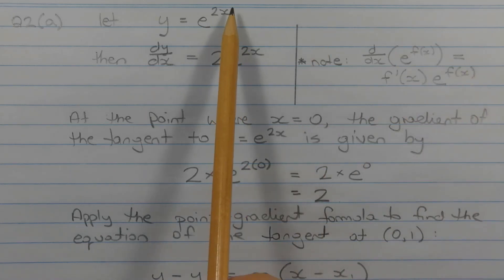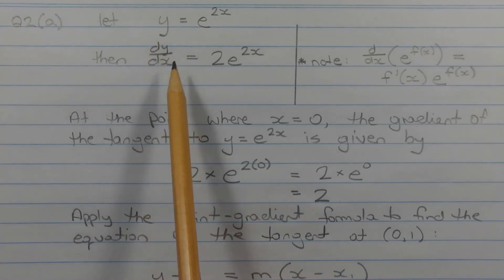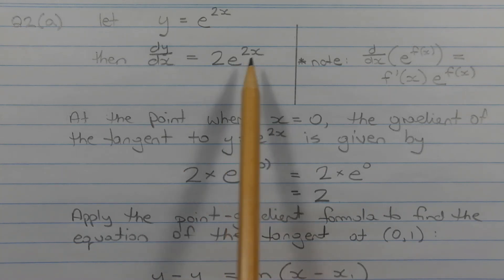In this case, f(x) is 2x, and f'(x), or the derivative of 2x, is just 2. So dy/dx = 2e^(2x).